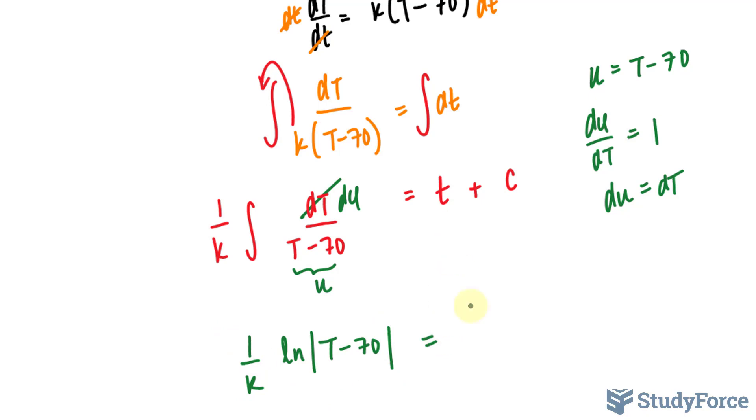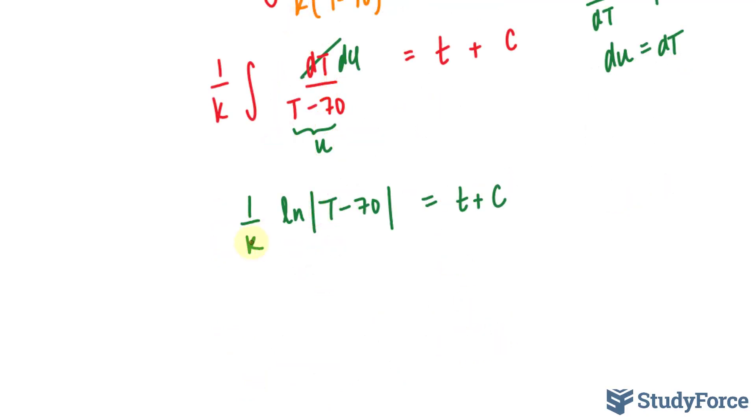This is equal to the right side, which hasn't changed. Next, I want to clear the denominator by multiplying this whole equation by k. This gets rid of this fraction. And we end up with k on the right side. kt times C. And there's no need to place that k in front of the C. So I have ln|T - 70| is equal to kt plus C.